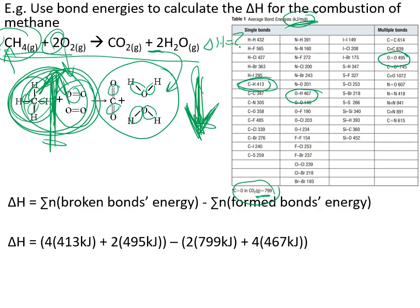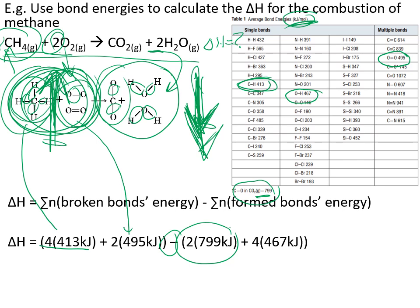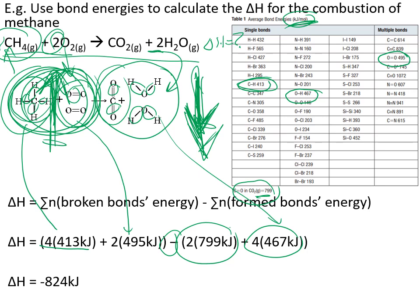Putting it all together: we have four C-H bonds and two O=O double bonds being broken (energy in), and we subtract the energy from forming the two C=O double bonds in carbon dioxide and the four O-H bonds in water. Summing all those values gives us our approximate delta H — the molar enthalpy of combustion of methane. It's an approximate value, but not bad for not having to light anything on fire.